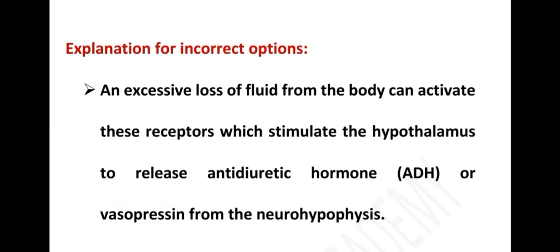Now let's see the explanation for incorrect options. The first option is ADH. An excessive loss of fluid from the body can activate the receptors which stimulate the hypothalamus to release antidiuretic hormone, otherwise known as vasopressin. It is released from the neurohypophysis. So ADH is an incorrect option.